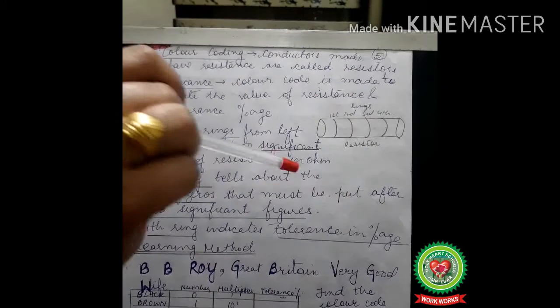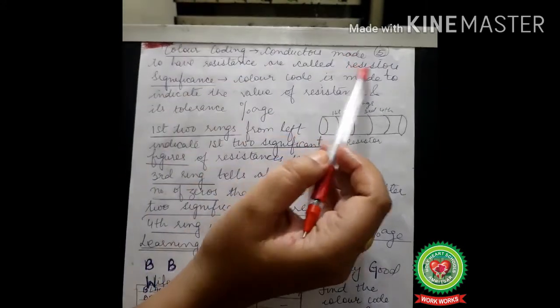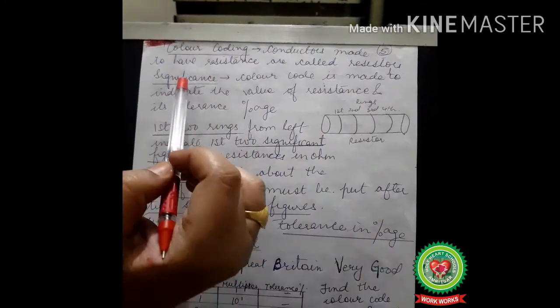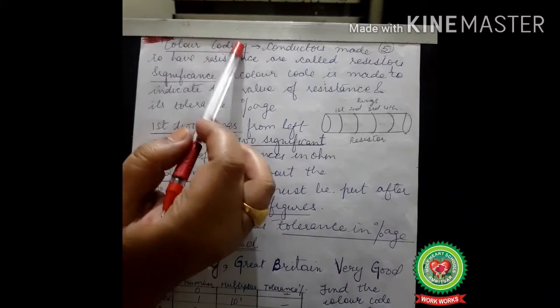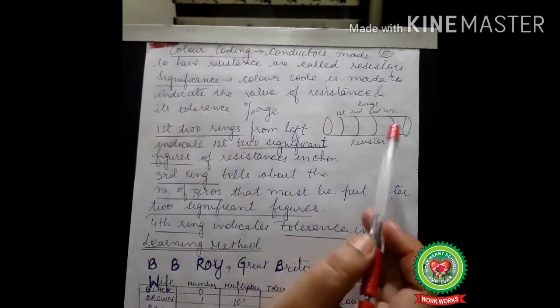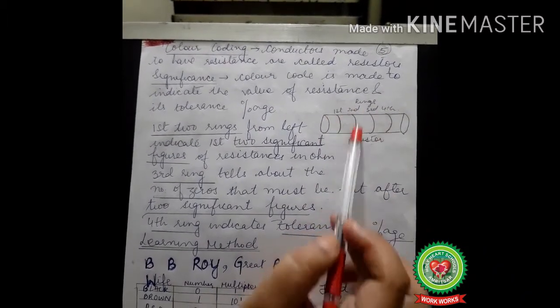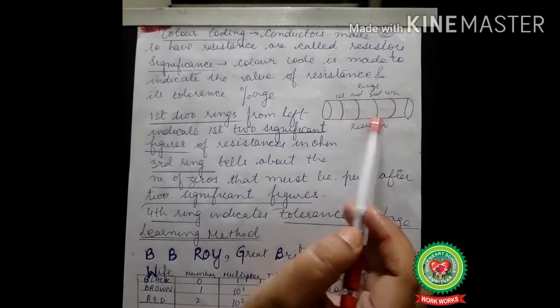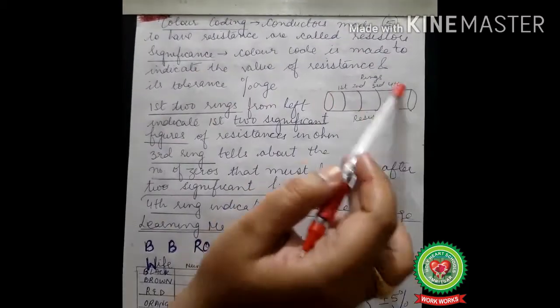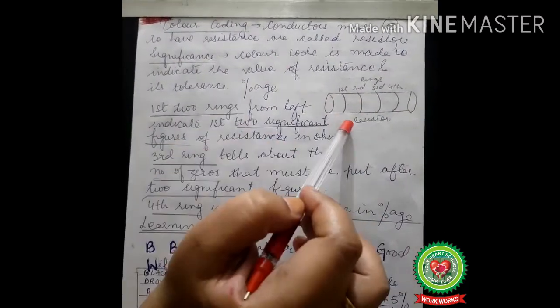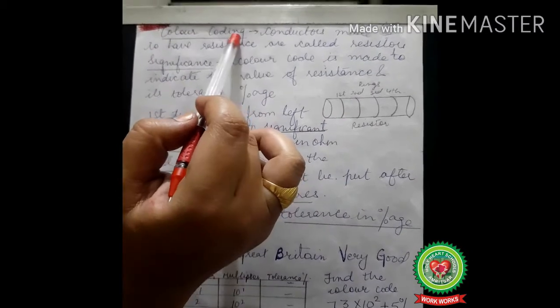Now, what is the significance of this color coding? We have not yet discussed what color coding is. This is a resistor, and here four rings are being made. They are of different colors, so we say that they are being coded with the color. That is color coding.